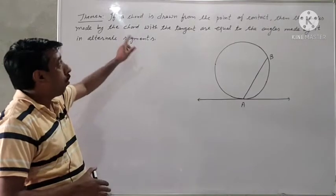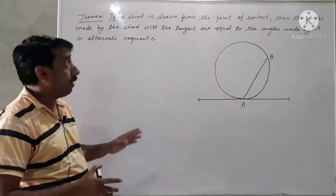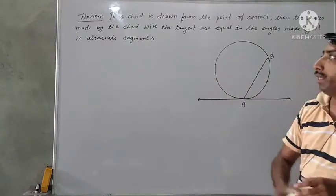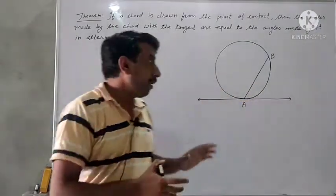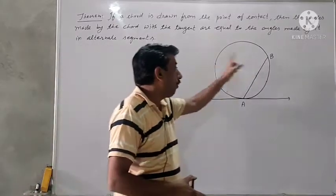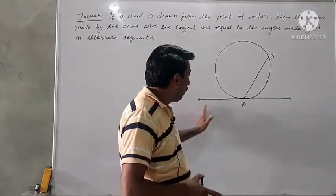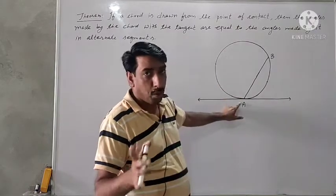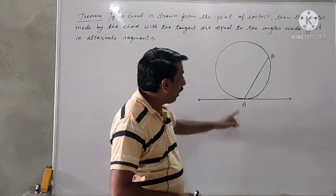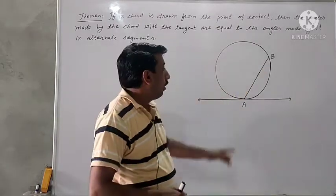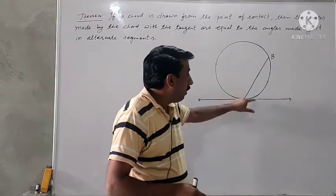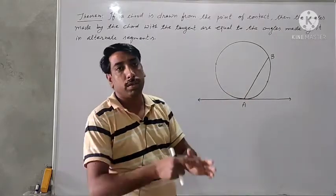Statement of the theorem is: if a chord is drawn from the point of contact, then the angles made by the chord with the tangent are equal to the angles made by it in alternate segments. Here I have drawn a circle having a tangent at A. A is the point of contact. This is the tangent which touches the circle at point A, and from A I have drawn a chord AB.